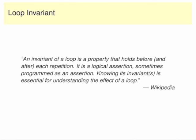We'll be a bit more specific about that as we go on, but for the moment it's just something which is true at every step of the loop. Knowing this thing is important for knowing if the loop is working or not — that's really what it comes down to. And typically when we write loops, we're always thinking about their loop invariants, we're just not verbalizing it.